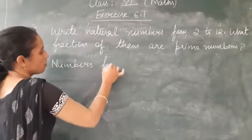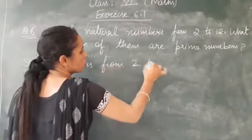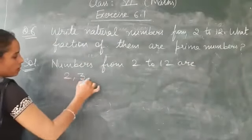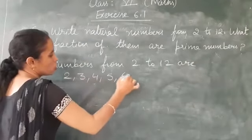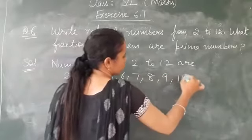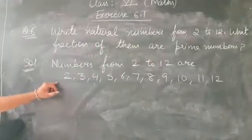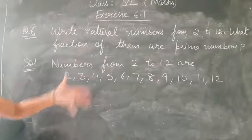So first you will write the numbers from 2 to 12. Now out of these we have to see how many are prime numbers.